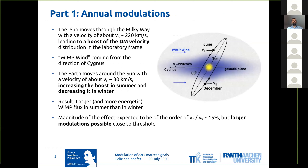I'm going to talk about two things: first annual modulations and then daily or diurnal modulations. To start with annual modulations, just very quickly, the origin, as we've heard about before, is the motion of the Sun through the Milky Way with a velocity of about 220 kilometers per second.